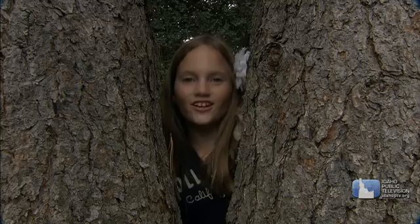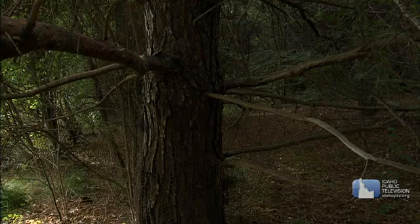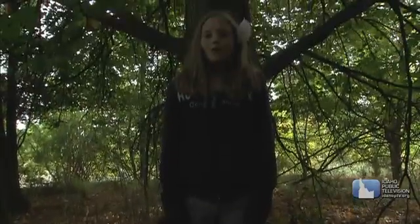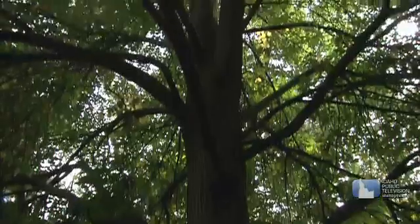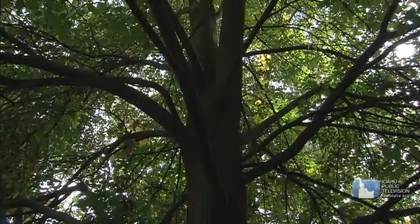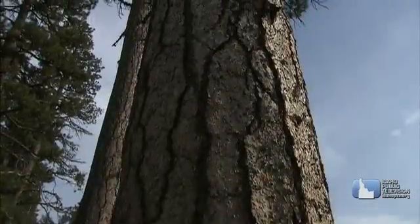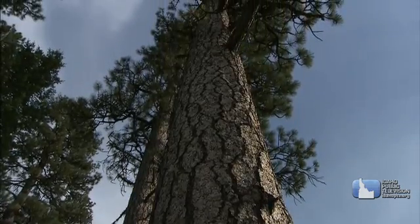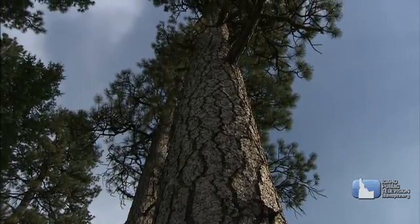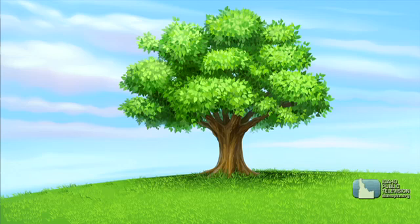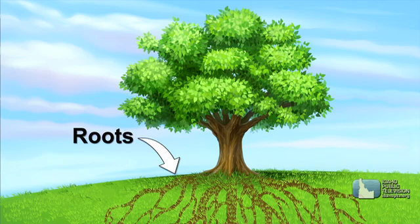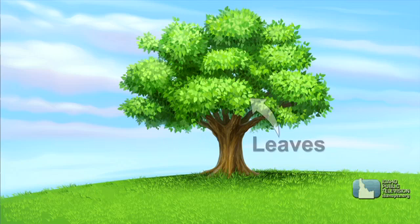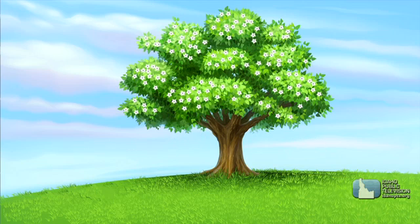What is the oldest thing on earth? What's the heaviest? What's the tallest? It's a tree. A tree is a plant — a special kind of plant, because it builds up strength by producing wood. Trees have five basic parts: the roots, the trunk, the branches, the leaves, and the flowers or seeds.